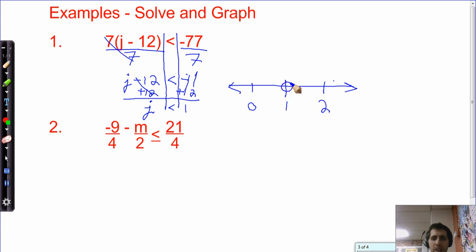Could j be one? J cannot be one. So, we'll leave that open, show you that it's not shaded, because we only shade what could be true. What values could be j and make it true? J could be anything less than one. Let's plug in zero. Zero minus 12 is negative 12. Negative 12 times 7 is negative 84. Great. We're all good.